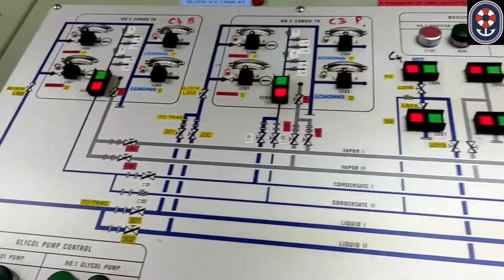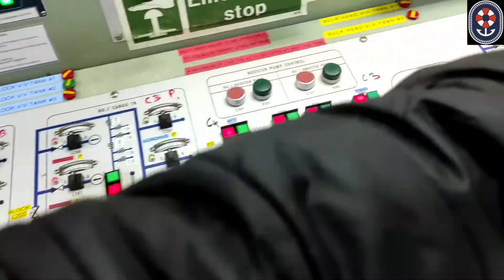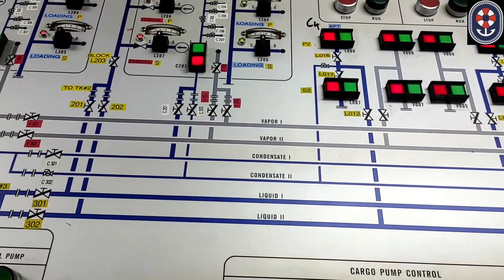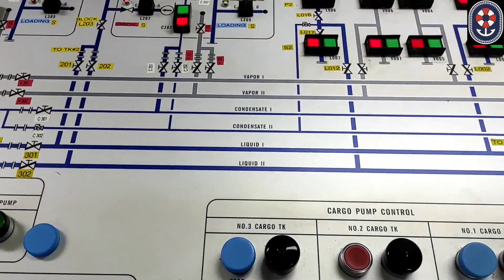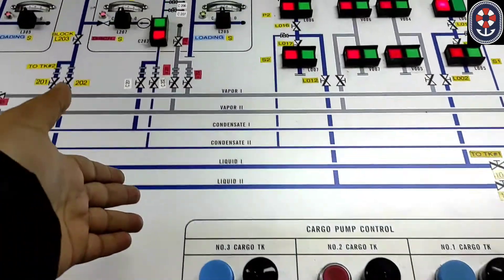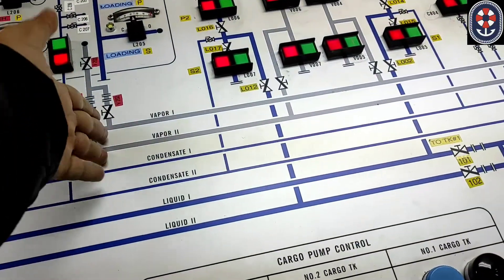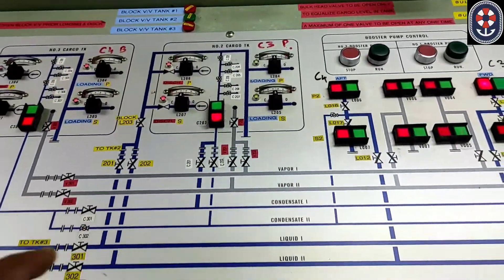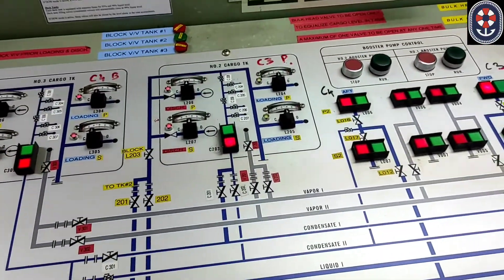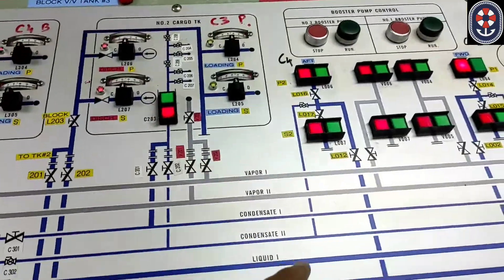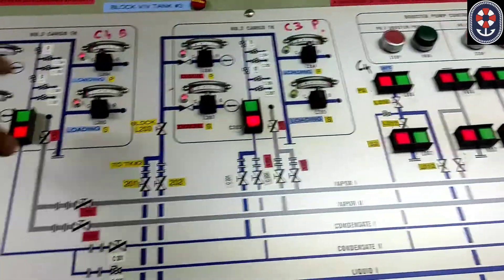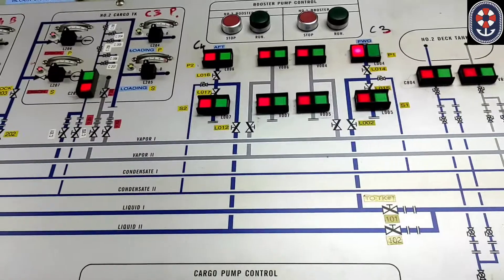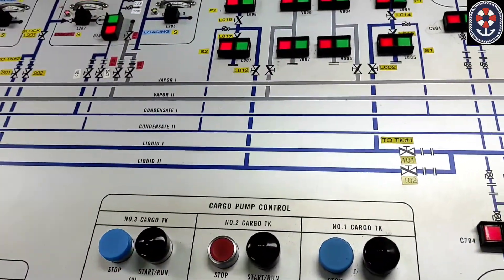And this is the whole line-up diagram for the cargo operation. This is cargo number three, two, and one. Then there is a liquid line. Basically in chemical tankers and oil tankers, you will find three-four lines and grades, but in this tanker, we have only two lines: liquid one, liquid two, and then condensate line, then vapor line. So vapor line is used for taking vapors from the tank and then recirculating in the compressor and intercooler, and then reliquefying the liquid. And condensate line is used for taking that liquid back to the cargo tanks.